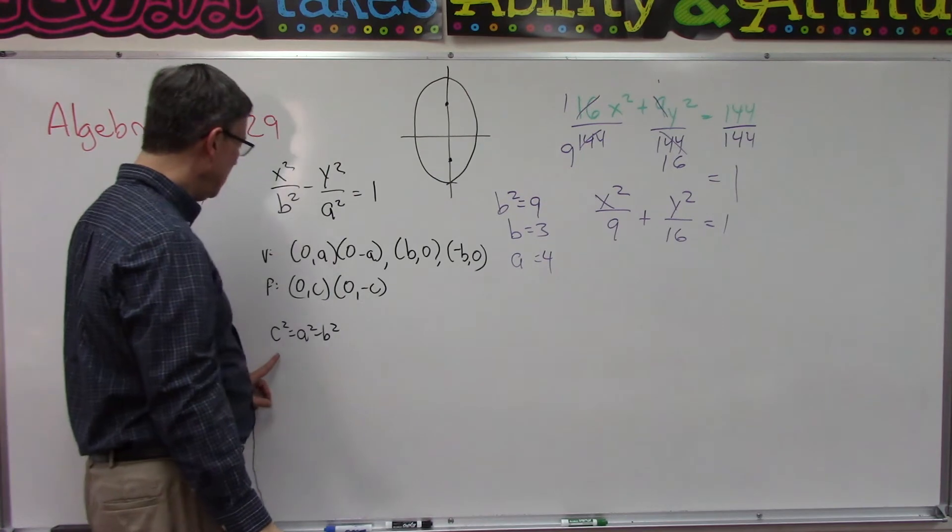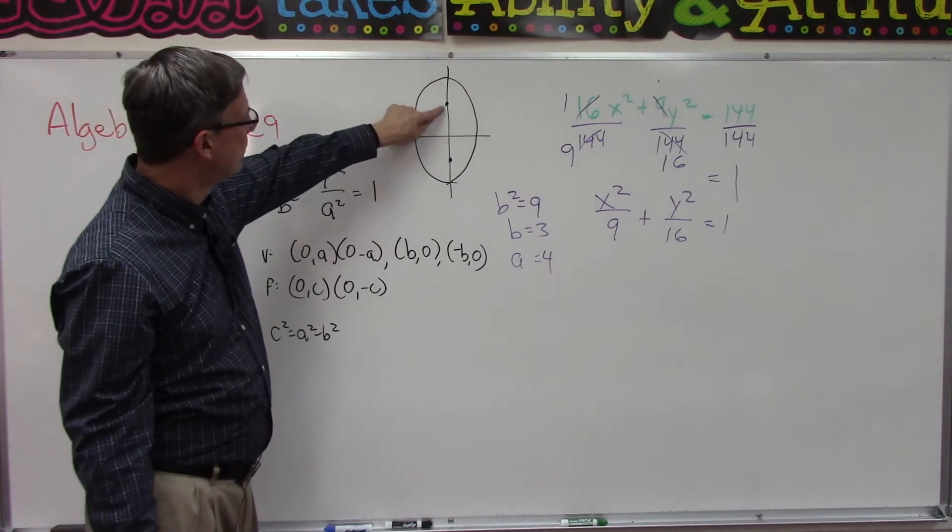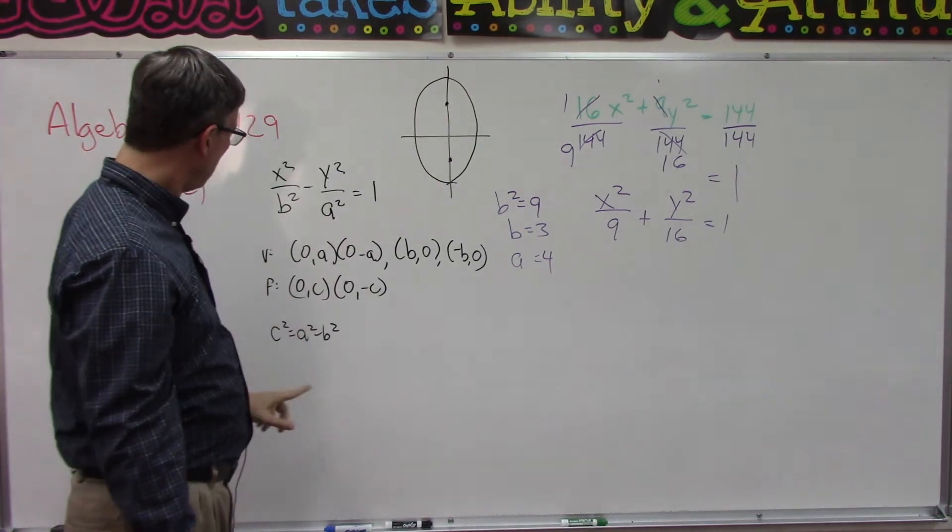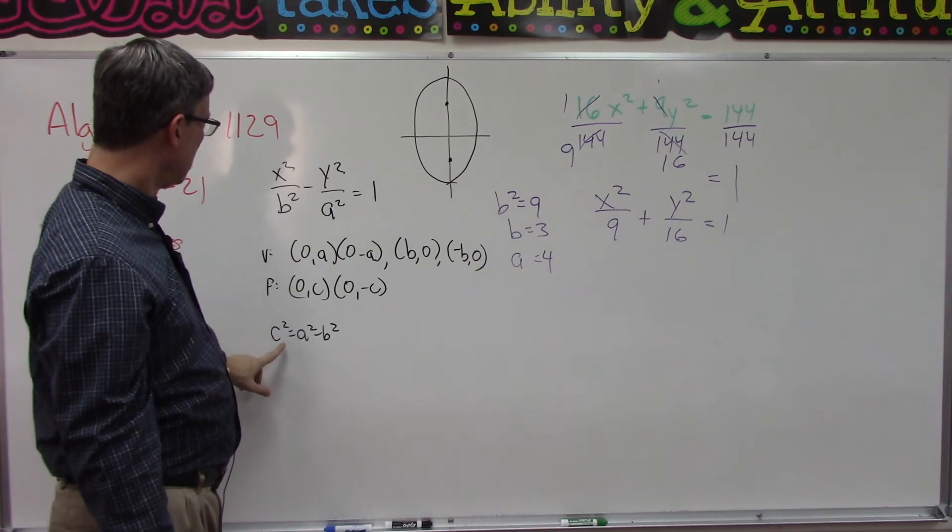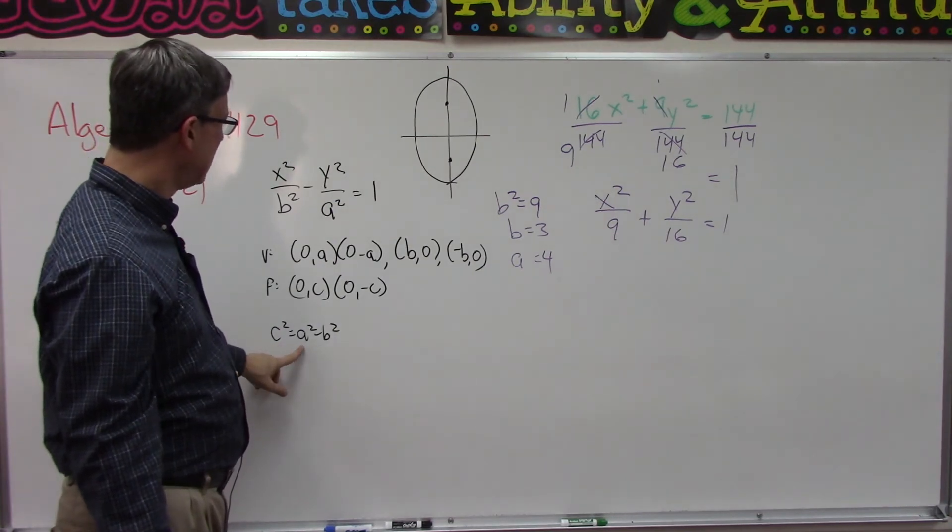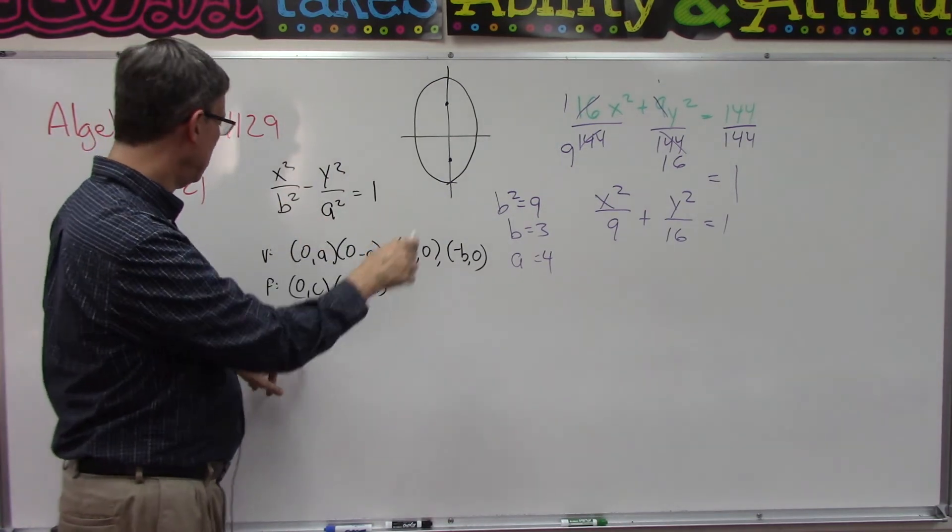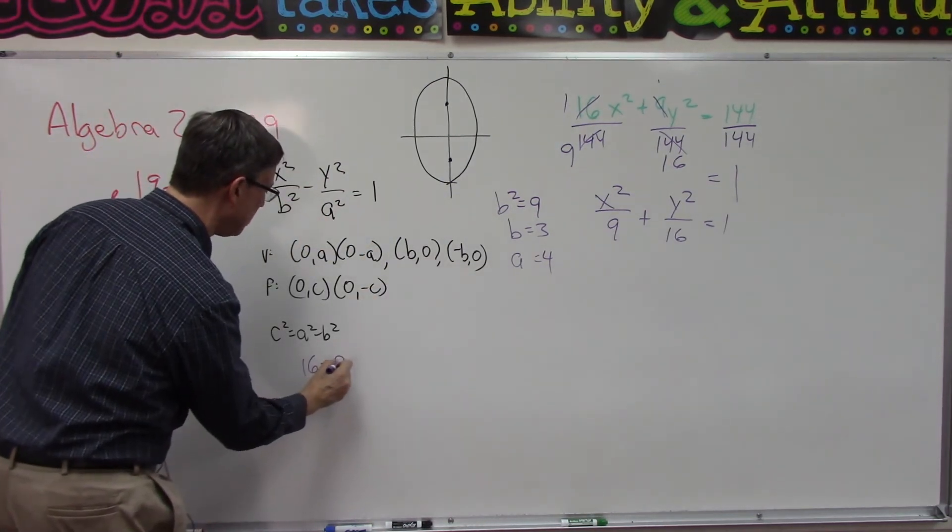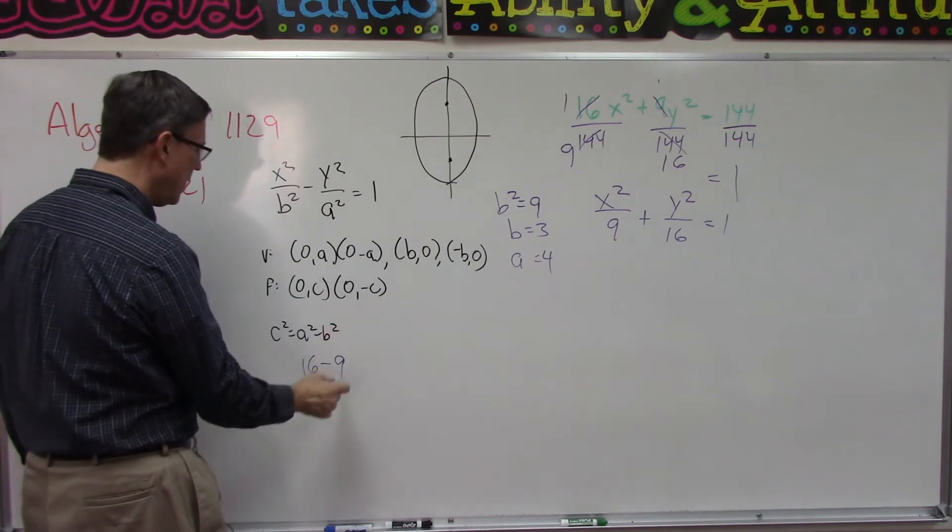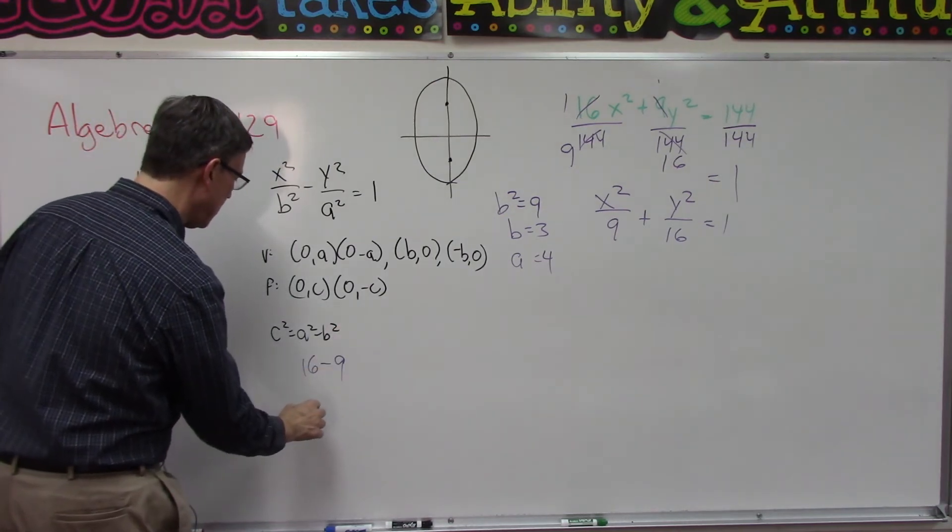Then to find the foci, we're going to have to solve for c. We take a squared, which is 16, and subtract the 9, which gives us 7.